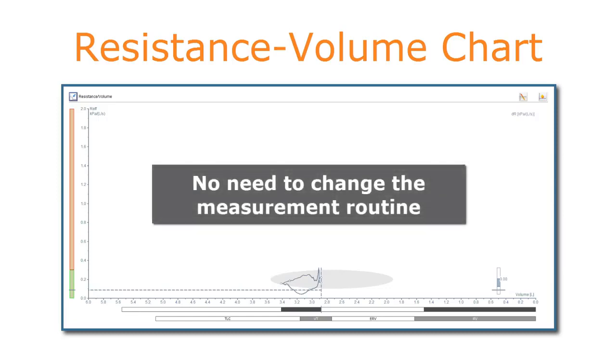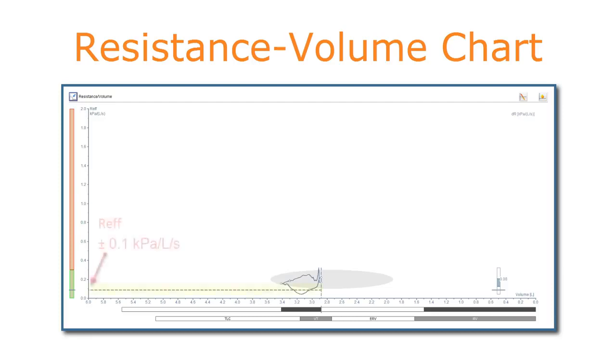There is no need to change your measurement routine. The resistance-volume chart is automatically created after the body measurement. A horizontal dashed line displays the effective airway resistance. The vertical dashed line displays the breathing level at which the measurement has been performed. For quick orientation, the predicted area of the resistance-volume loop is shown in the chart.